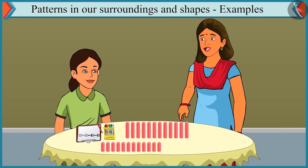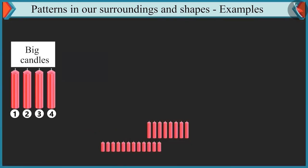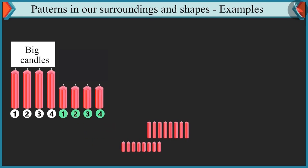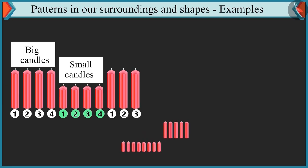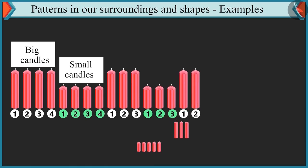Now I will make a pattern with these candles. You have to complete it. Four big candles, four small candles near them. Then again three big candles and three small candles. Then again we will place two big candles and after that two small candles. You are absolutely right. Now proceed with this pattern and complete it.